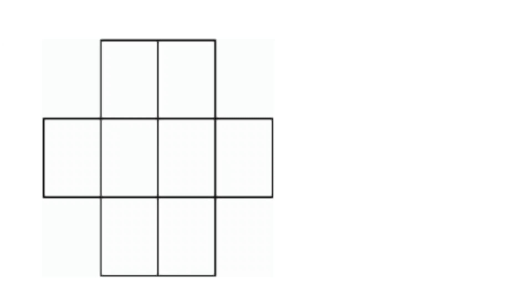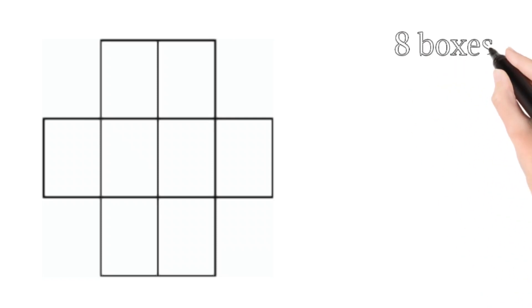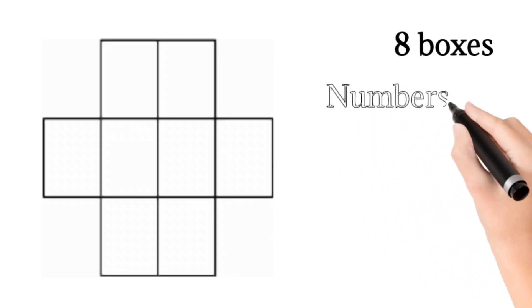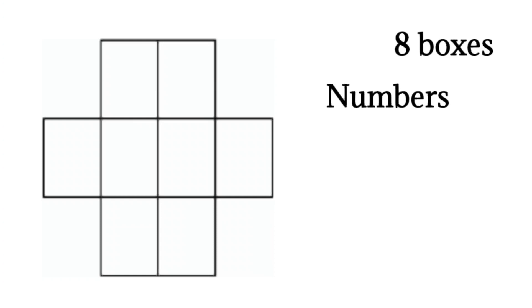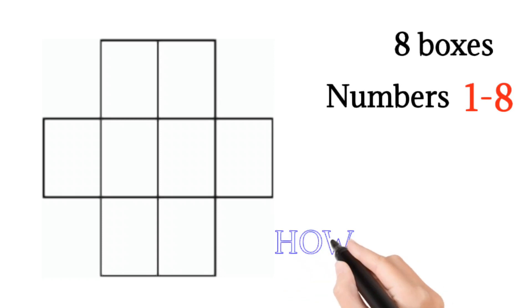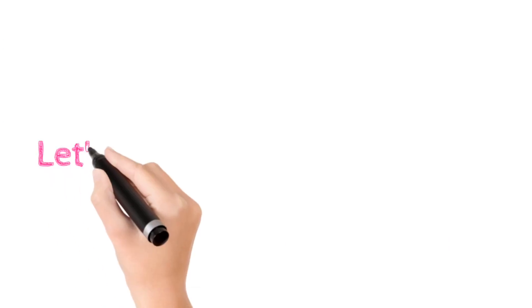You can see this figure — it consists of eight boxes. You need to fill these boxes with numbers, specifically natural numbers from 1 to 8. The puzzle is: how do you fill these numbers? Let us see what the conditions are for filling the boxes.